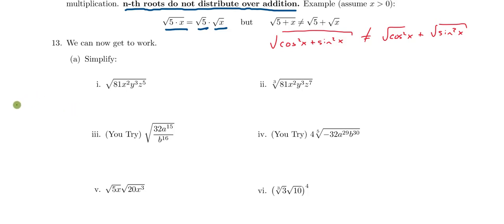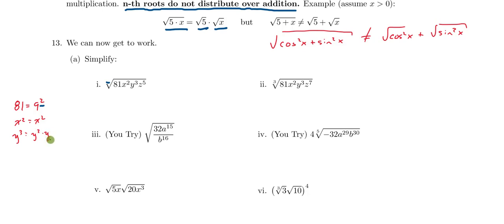So for example, we can recognize that the number 81 is the same thing as 9 squared. What's unique about this squared is that it matches the index of this radical here — the index of that radical is 2. Likewise, x squared is already written as a perfect square, so that'll just be x squared.